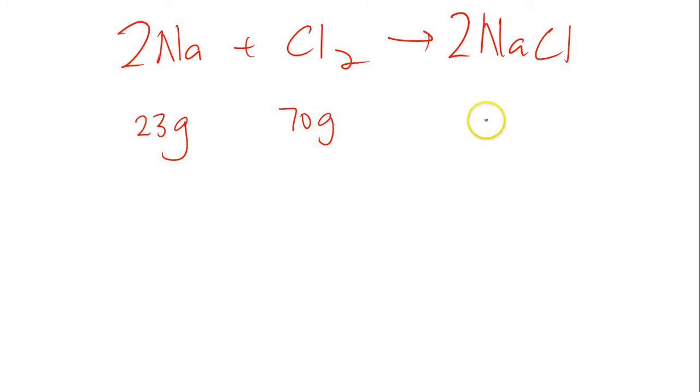So for example, you want to make sodium chloride by reacting sodium with chlorine. Let's say you want to react sodium with chlorine. If I have 23 grams of sodium, I have let's say 70 grams of chlorine, what is the mass of NaCl which can be formed?